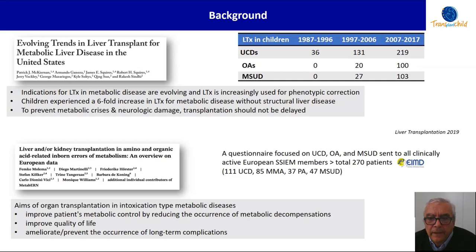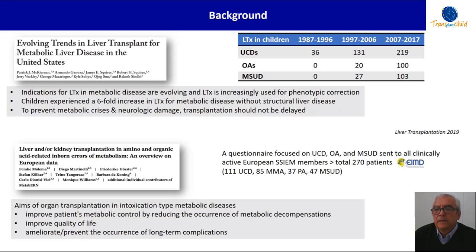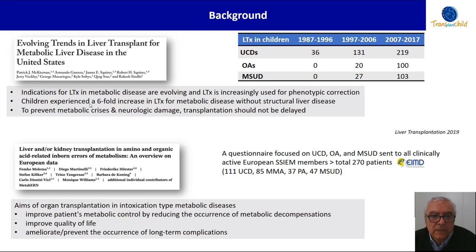I want to highlight the importance of two recent papers. The first, by Patrick McKiernan and colleagues in the United States, shows evolving trends in liver transplant for metabolic disease from the 1980s to 2017. The conclusion of this work is that indications for liver transplantation in metabolic diseases are evolving, and liver transplantation is increasingly used for phenotypic disease correction. Children compared to adults experience a six-fold increase in liver transplantation for metabolic diseases without structural liver disease — including urea cycle disorders, organic acidurias, and MSUD — with the number of transplants increasing over recent years.